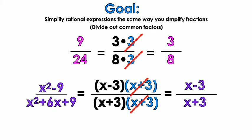This is what we're doing when we're simplifying rational expressions. You're finding the common factor, simplifying it, and then getting the reduced fraction as your answer.